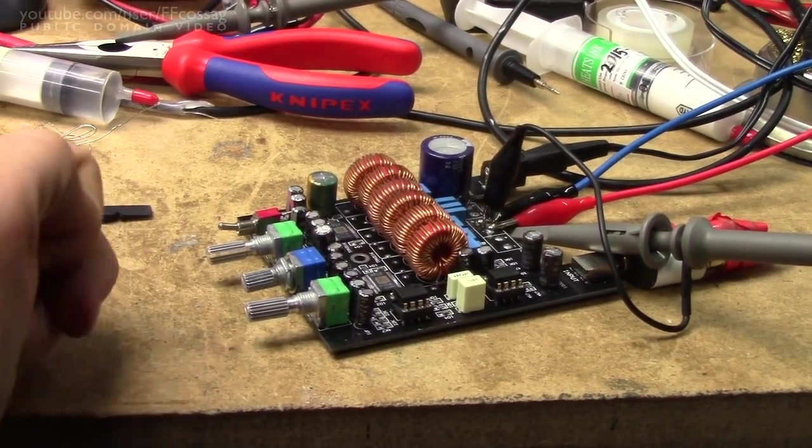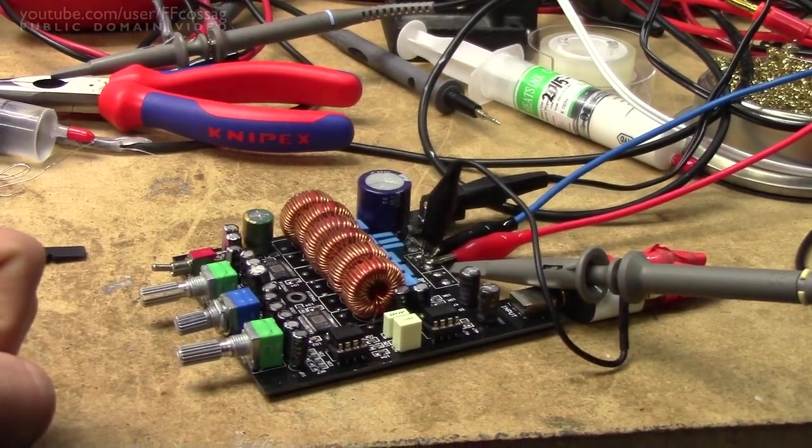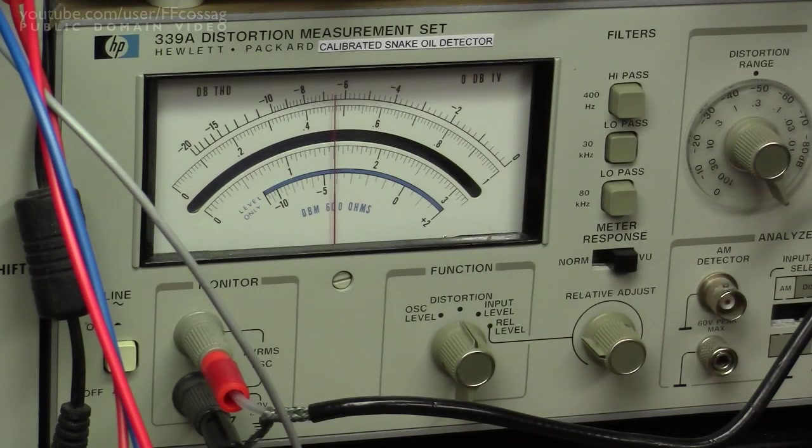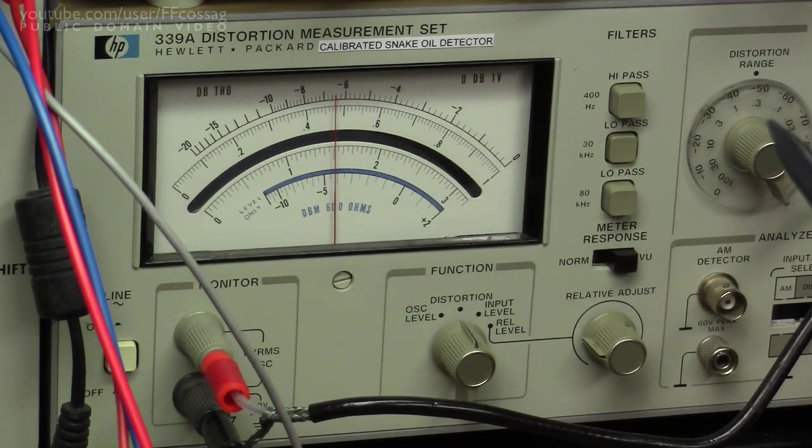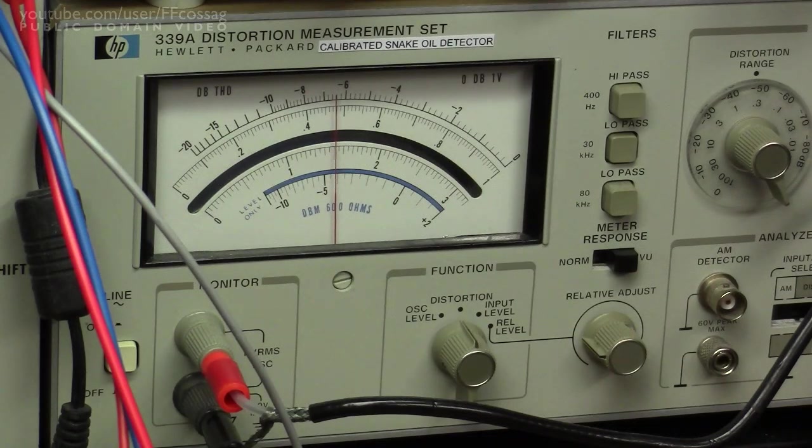Before I wrap this up, let's do a quick distortion test to see if it's made any difference. We're now putting just about 20 watts per channel into 8 ohms, and as you can see, we are on the 0.3% distortion full scale setting on the distortion meter and we're getting about 0.15% rather than the 1.2% or so which we saw before. This is an excellent result - the board has been fixed.